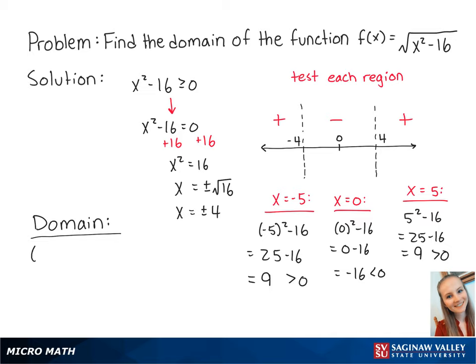Now we know that the domain is the set of numbers between negative infinity and negative 4 included, and the set of numbers between 4 included and positive infinity. And this is the final answer.